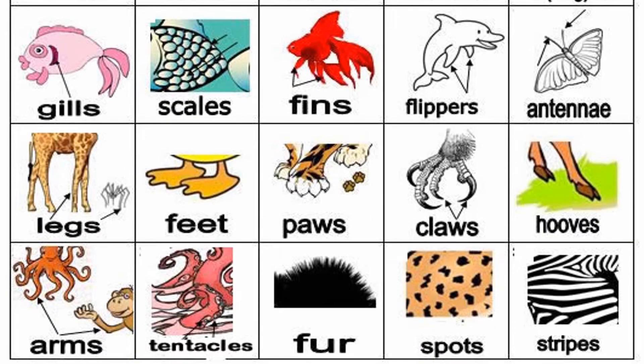They can also have gills, scales, fins, flippers, antenna, hooves, claws, paws, feet, legs, arms or tentacles, fur, spots, and stripes.